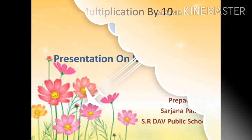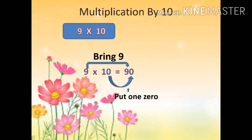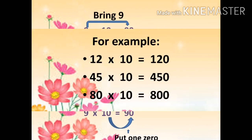Let's start with the first topic: multiplication by 10. In the given example, 9 multiplied by 10, we will keep 9 as it is and put one zero, and it becomes 90. So 9 multiplied by 10 is equal to 90, because in 10 we are having only one zero. For better understanding, let's see some more examples.